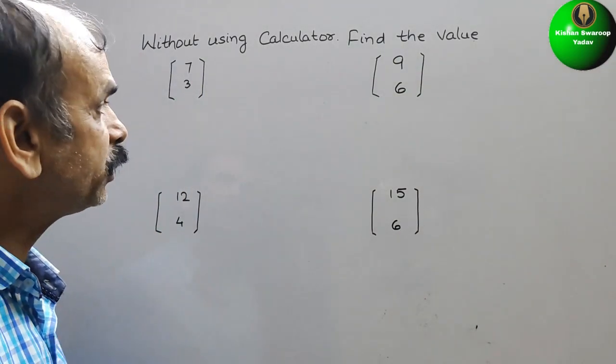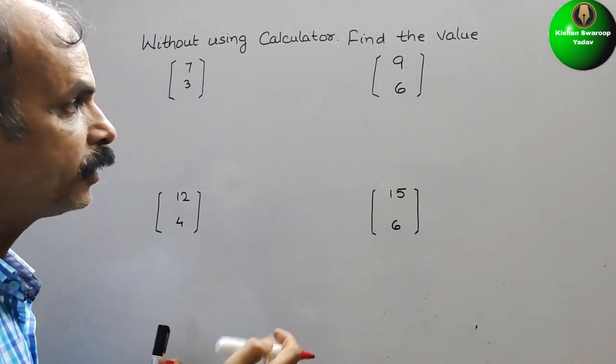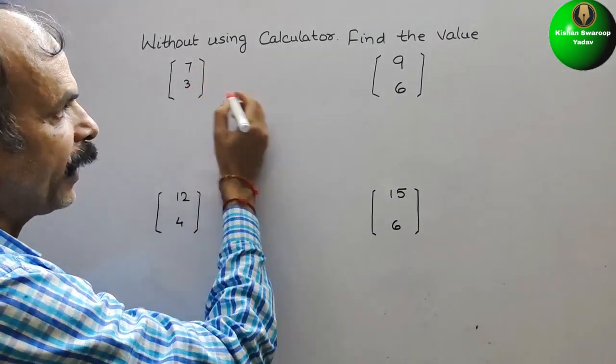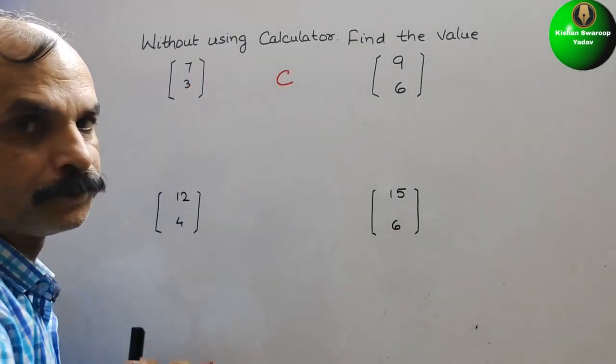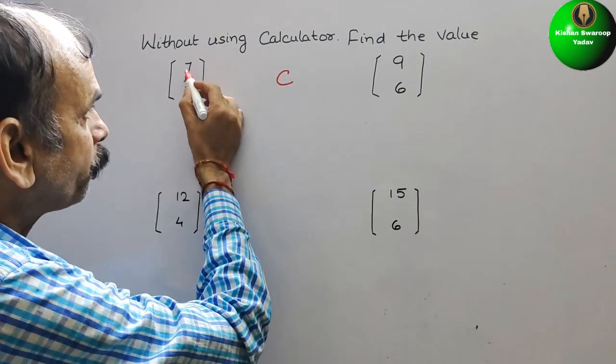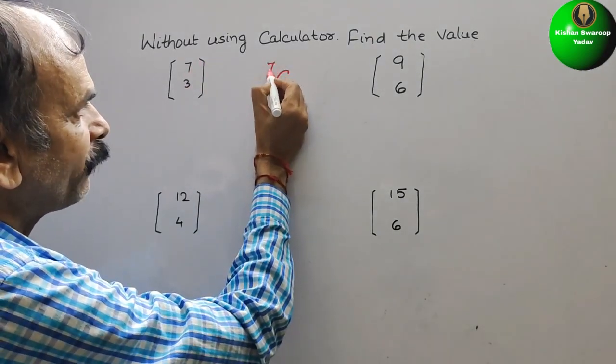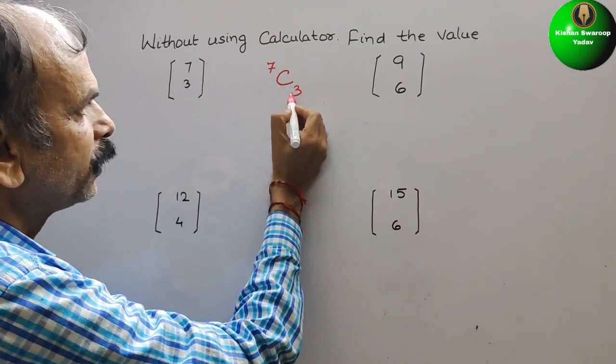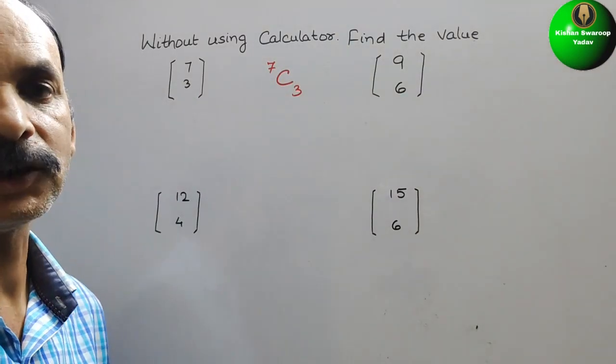How we have to do? So this is nothing but, this vector is your C and the top one we will write here that is 7 and the bottom here it is 3, so now it is a combination.